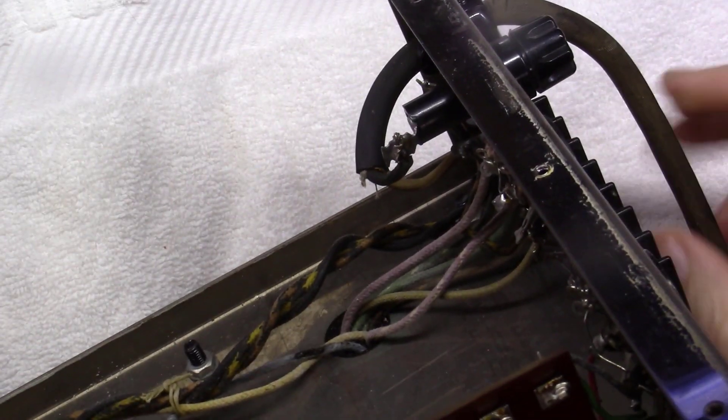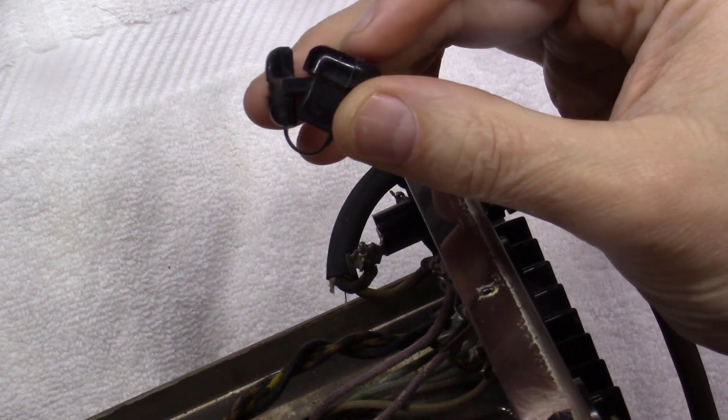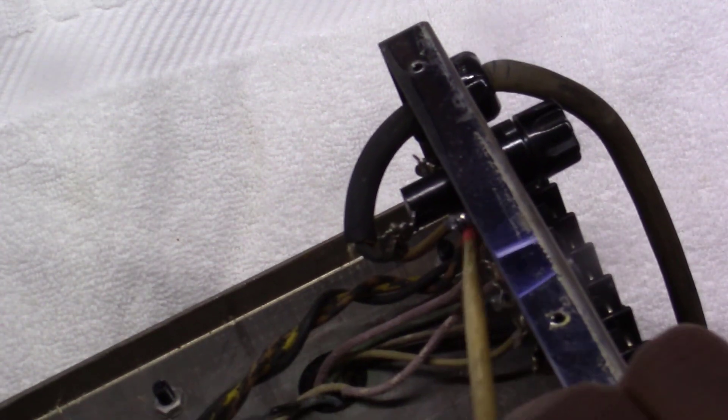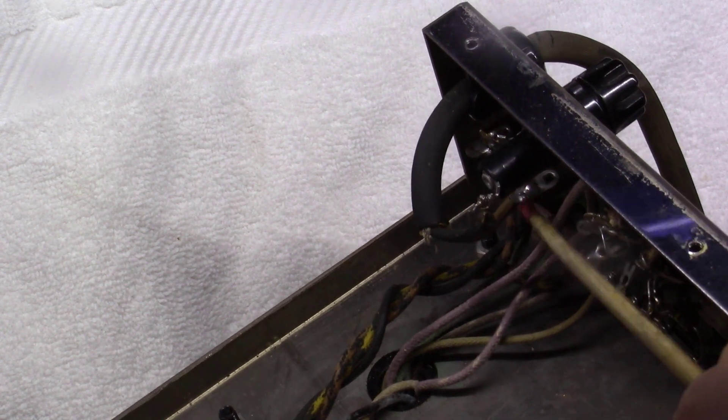What you have here is your power cord and it comes through the amplifier in a rubber grommet like this, and I'll talk about that more in a minute. It basically then comes through on the other side here and it feeds up. What you have here is the actual hot wire or the black wire that goes to the fuse holder right here. Then you have the white wire that goes down here to a terminal lug position right here and ties off.